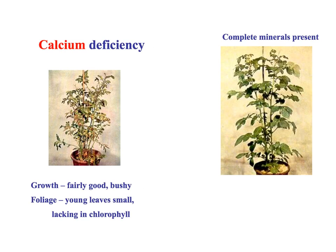And calcium deficiency. We've got fairly good growth - it looks quite a bushy plant - but if we look at the foliage, we've got young leaves that are very small, and once again we're lacking in chlorophyll. So we need calcium for that. It's very different when we compare it to the plant on the right with a complete set of minerals. So we've seen a few images showing the differences - let's now put some of this down into a table.